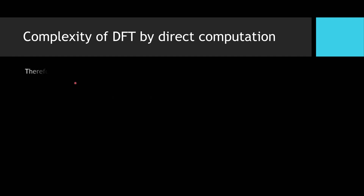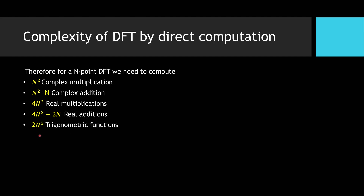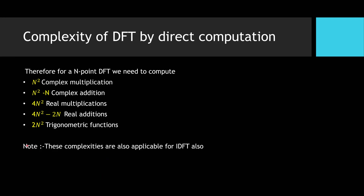To summarize, for an N-point DFT we need: N squared complex multiplications, N squared minus N complex additions, 4N squared real multiplications, 4N squared minus 2N real additions, and 2N squared trigonometric functions. It is worth noting that these complexities are also applicable for the IDFT.